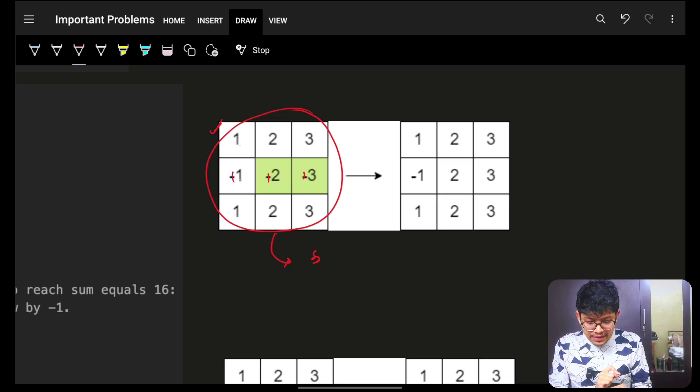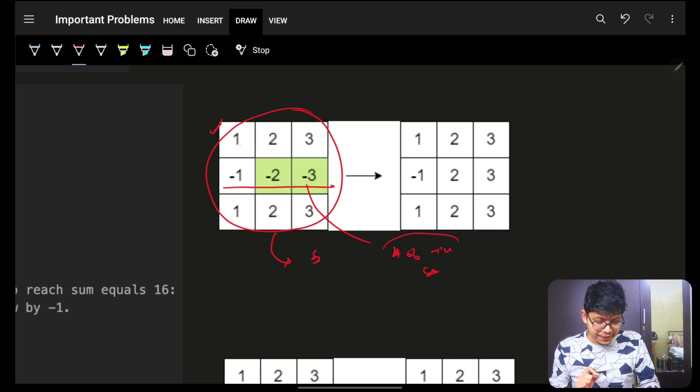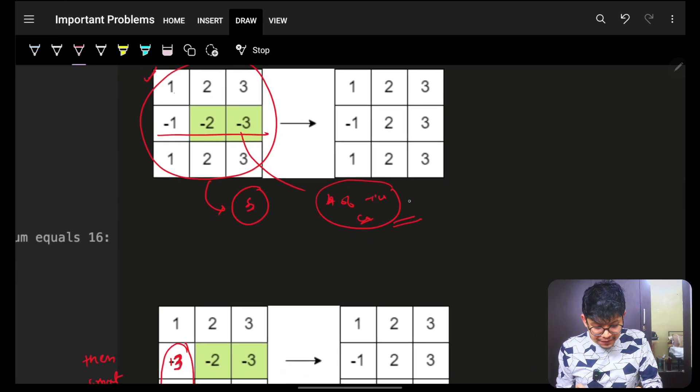And also, parallelly, I will keep on counting the number of negative numbers. If that is even, this summation which I saw will be my answer. If this count of negative numbers is odd,